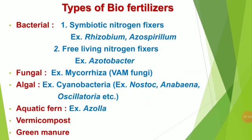The types of biofertilizers are: first, bacterial biofertilizers — there are two types: symbiotic nitrogen fixers (example: Rhizobium, Azospirillum) and free-living nitrogen fixers (example: Azotobacter). Second, fungal biofertilizers (example: Mycorrhizae or VAM fungi). Third, algal biofertilizers (example: Cyanobacteria or BGA — Nostoc, Anabaena, Oscillatoria, etc.). Fourth, aquatic fern (example: Azolla), and manure including vermicompost and green manure.